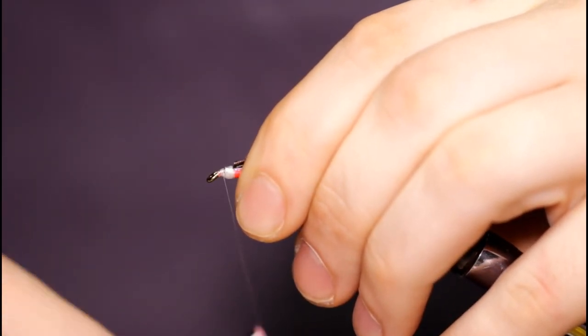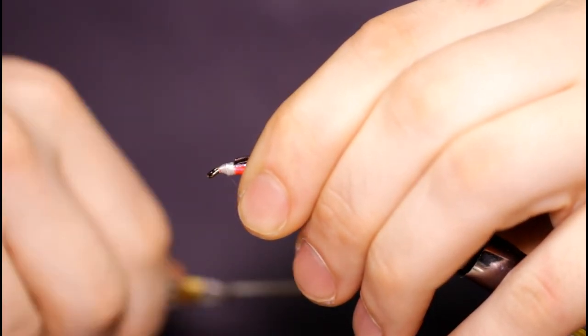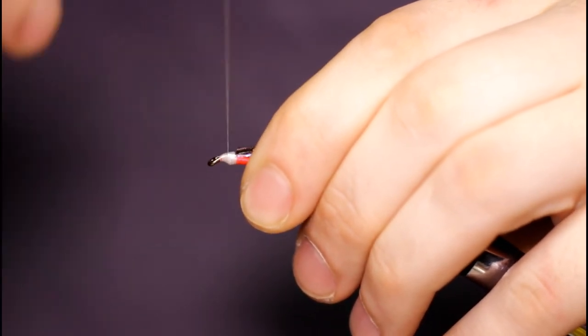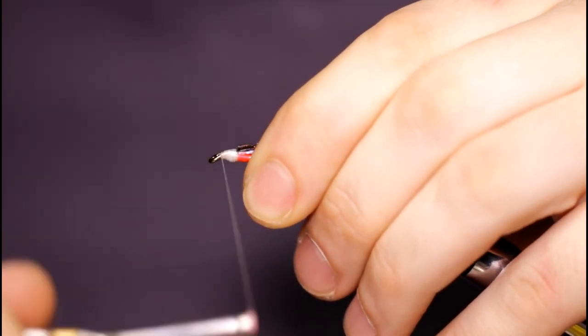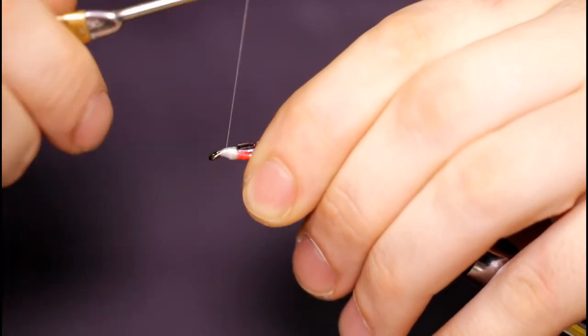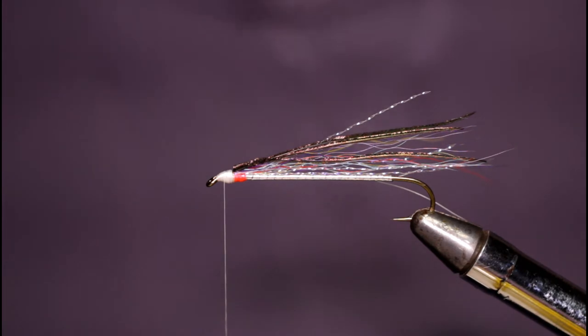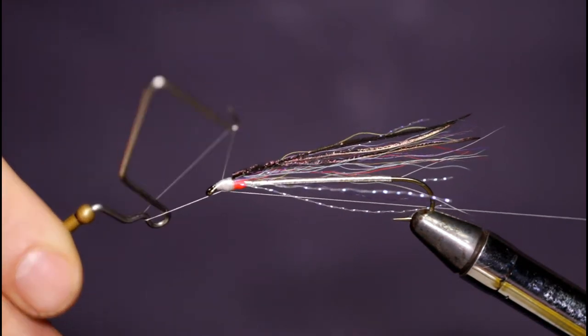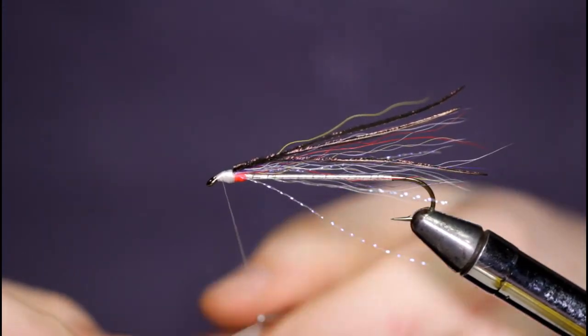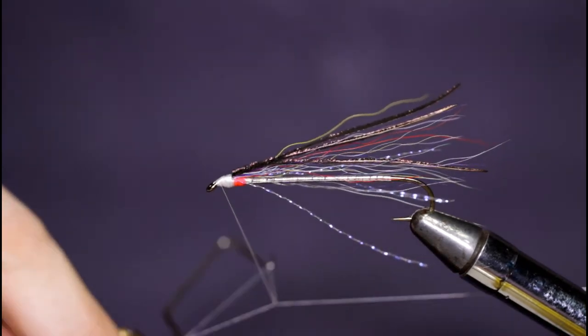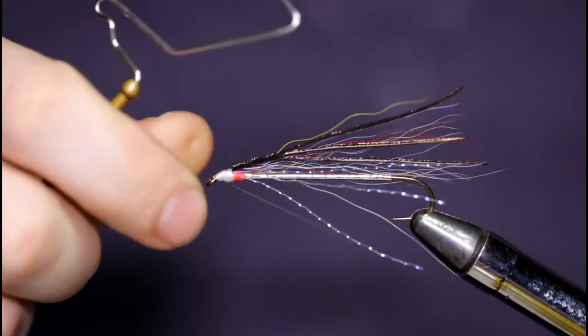That's going to be the last material guys, so I'm going to take this white thread and just build up my head here, build up the shape of my head. As you're building up this head, just keep in mind that there will be some eyes painted on this head, so building up a nice even thread base as your head is a really good idea so that your paint application can go on smoothly. That looks pretty good to me. I'm just going to throw in a whip finish here, tighten that up and throw in another one. I'll come in with my scissors and snip this off.